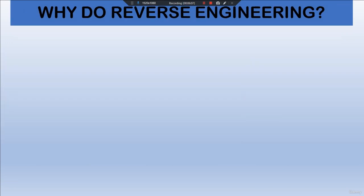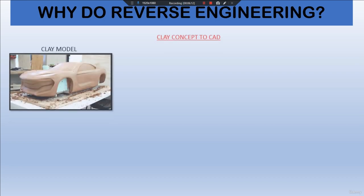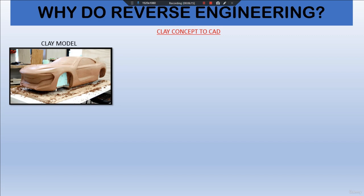Now we come to the applications of reverse engineering — why do it. The first application is clay concept to CAD. Clay models are generally made in automotive industries to view the aesthetics of a car. It is much cheaper to create a clay model rather than fully manufacturing it and editing it afterwards. When a clay model is prepared, it is scanned using a 3D scanner and converted into scan data.